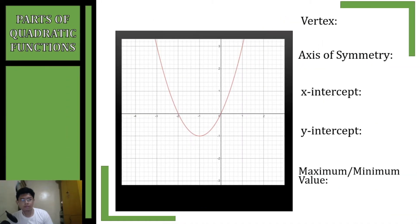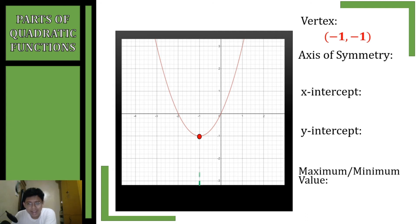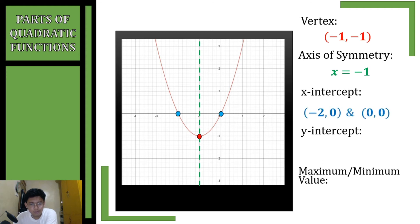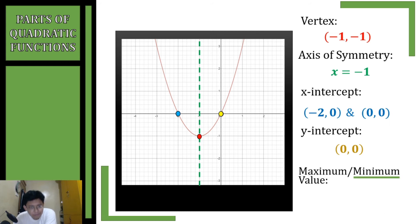Let's have another example. The vertex is at (-1, -1). The axis of symmetry is x = -1. Take note that it is a line, so it should be in the form of an equation. The x-intercepts are located at (-2, 0) and (0, 0). The y-intercept is at (0, 0) — our origin is located on both the x-axis and y-axis.